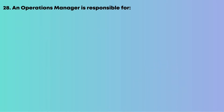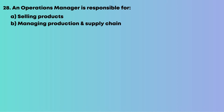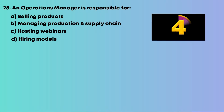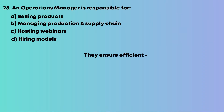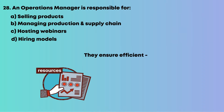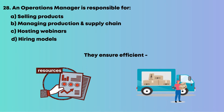Question 28: An operations manager is responsible for: A, selling products; B, managing production and supply chain; C, hosting webinars; D, hiring models. They ensure efficient resource use and product delivery. The answer is B, managing production and supply chain.